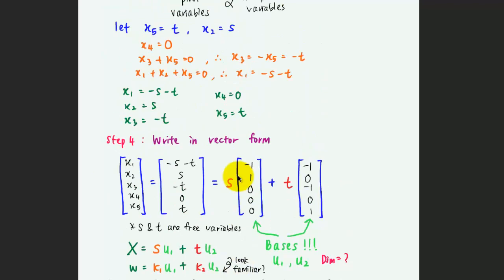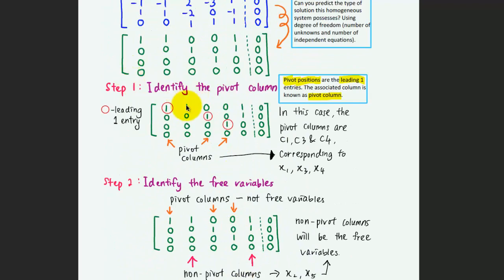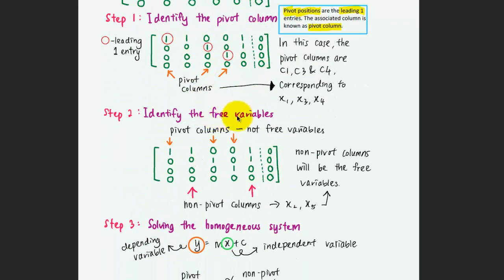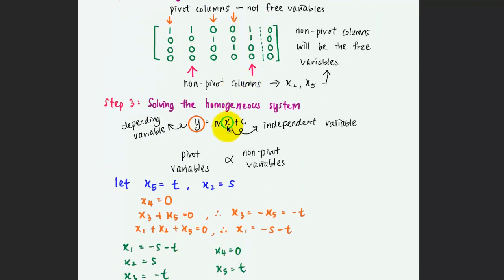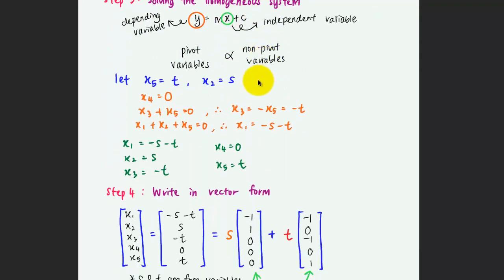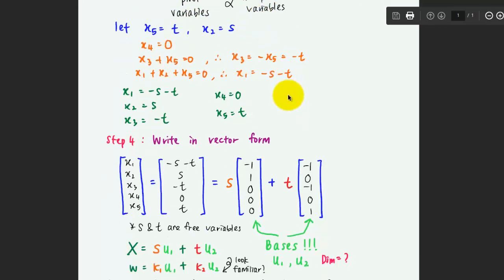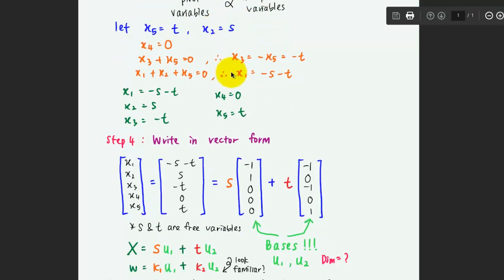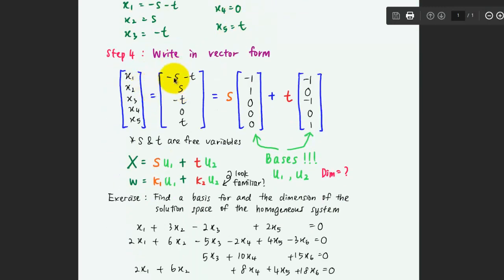Your exercise now is to find the basis and dimension of the solution space of a given homogeneous system. Follow the four steps: first, identify the pivot columns; second, identify the free variables; third, solve the homogeneous system by putting pivot variables on the left-hand side and non-pivot variables on the right-hand side; and fourth, assume parameters for the free variables, put them into column vectors, and factorize out the parameters.